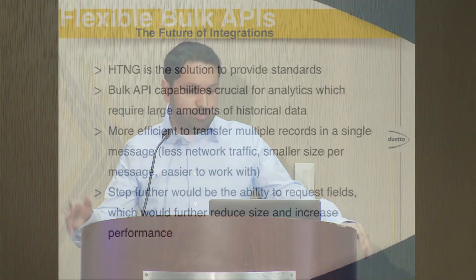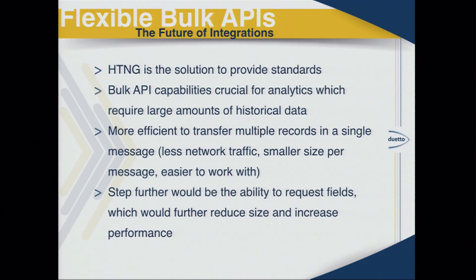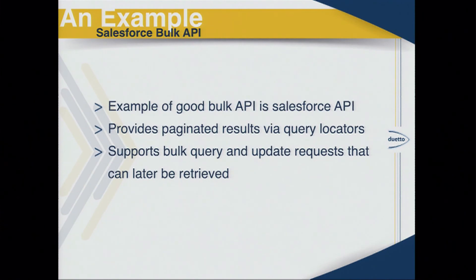So it would be a lot more efficient to have bulk APIs. An example of a great bulk API is Salesforce — not in the hotel industry, but they work with a lot of data and have solved many of these problems. One thing they provide is paginated results by a query locator. If you're asking for two weeks of data with thousands of reservations, that's a very large payload. The same way you hit next on Google results, you'd have the first 100 results returned along with an ID to request the next 100, without bogging down the server or creating a huge network bandwidth issue.